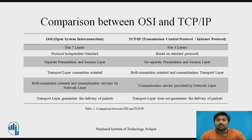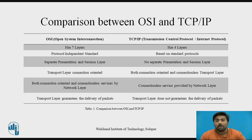TCP/IP is considered to be a more credible model. This is mainly due to the fact that TCP/IP protocols are the standards around which the Internet was developed, and it mainly gains credibility due to this reason. In contrast, networks are not usually built around the OSI model, as it is merely used as a guidance tool.